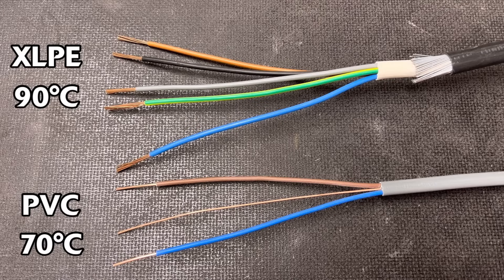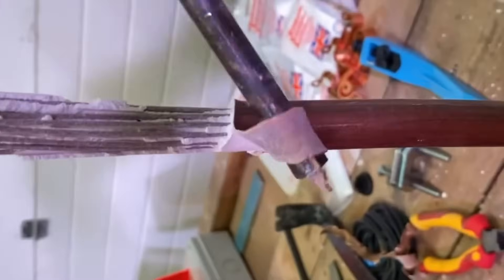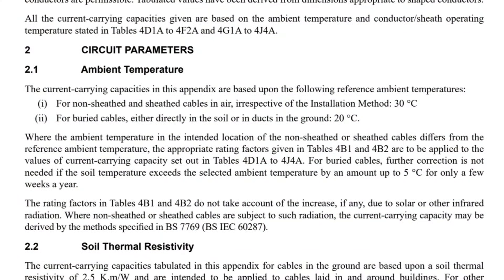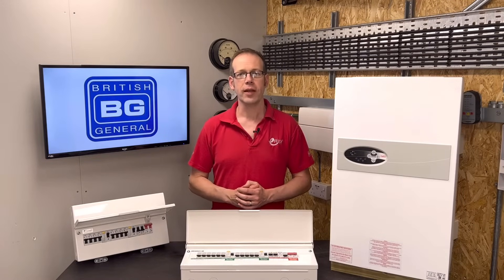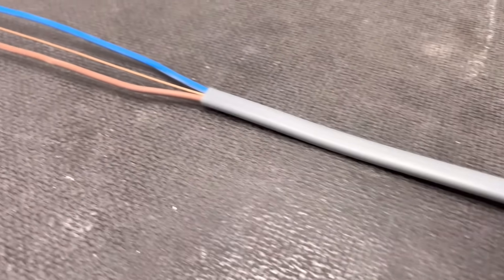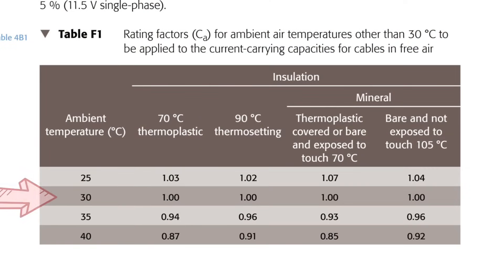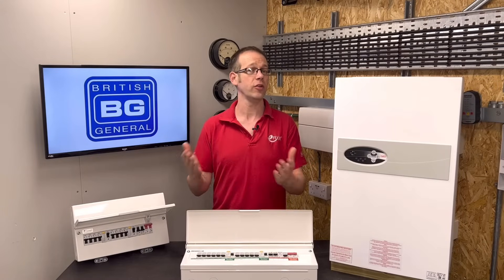Then you've got 90 degrees C thermosetting, which is what you'd find on XLPE insulated steel wire armoured cable. The final two columns relate to mineral insulated cables, which have become pretty uncommon except in specialist installations. So let's assume we're going to wire our electric boiler in twin and CPC cable with 70 degrees C thermoplastic insulation. If the ambient temperature in the installation is 30 degrees C, the rating factor will be one. This is significant because it means a temperature of 30 degrees C will not affect the current carrying capacity of the cable — dividing by one doesn't change its value.